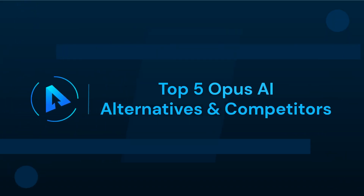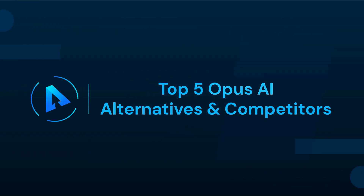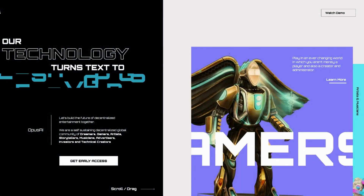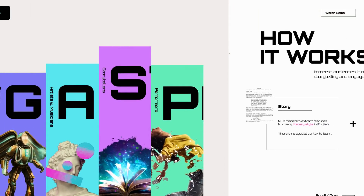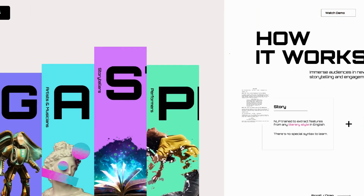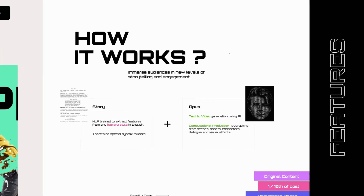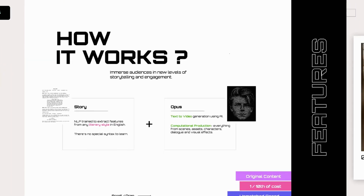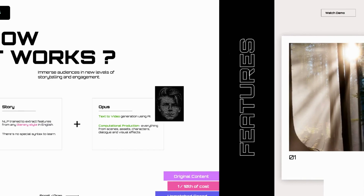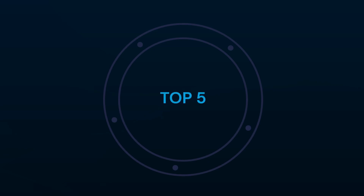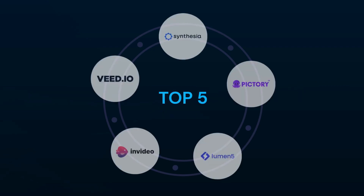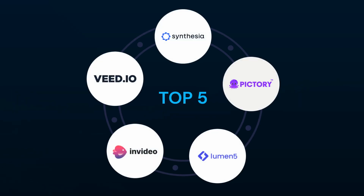In this video we will be talking about the top alternatives of Opus AI that will open up new possibilities for your video creation and editing endeavors. The top five best alternatives of Opus AI are Weed.io, Synthesia, Pictree, Lumen5, and InVideo.